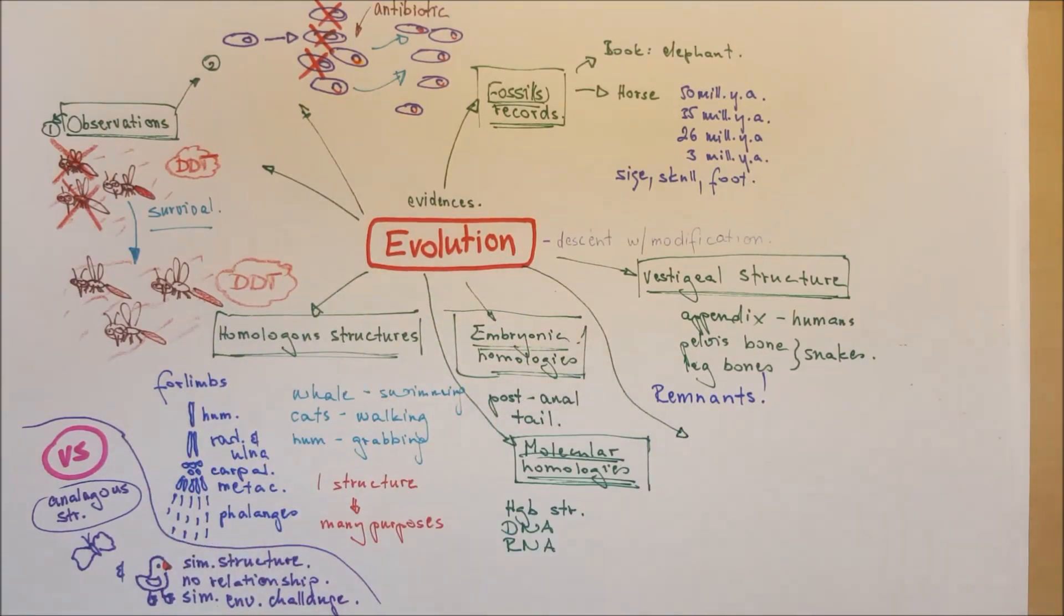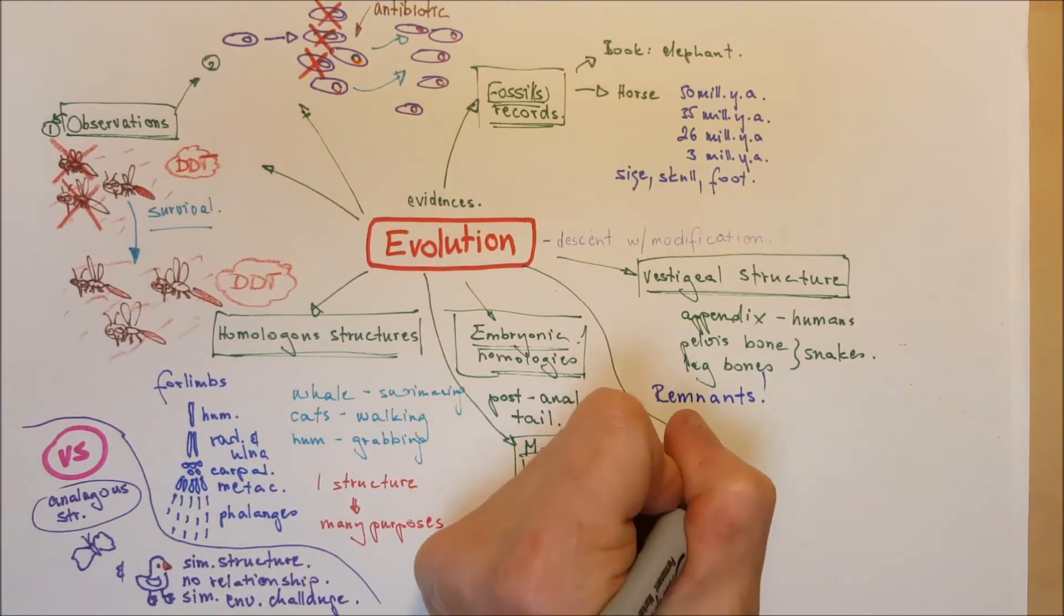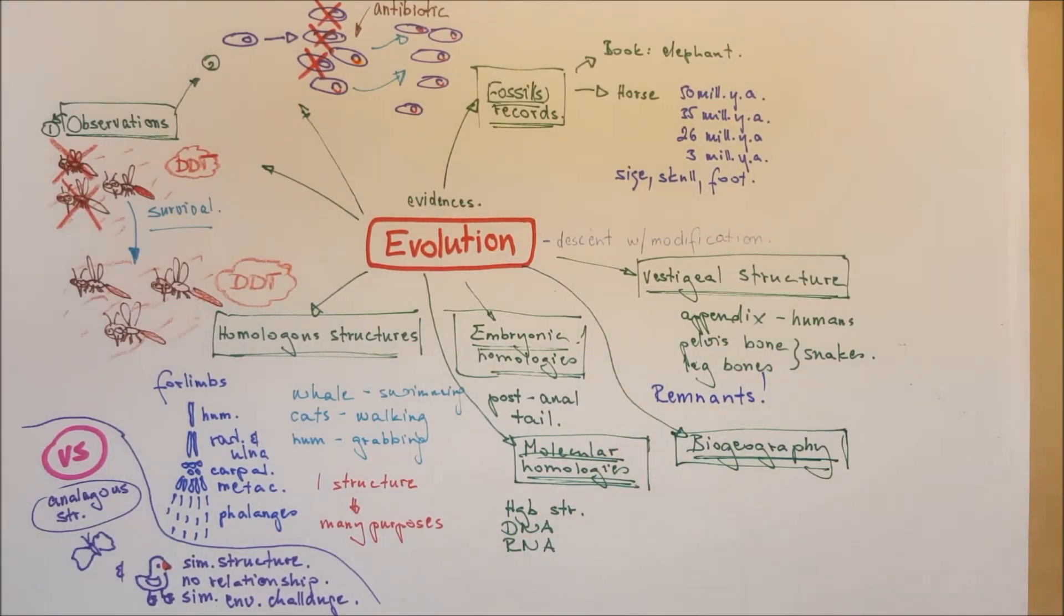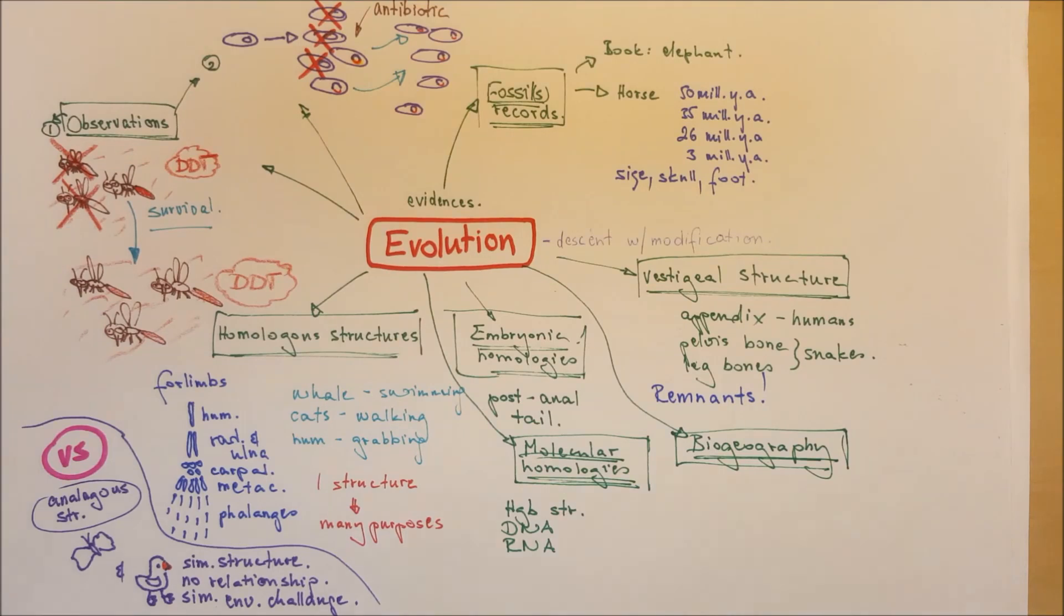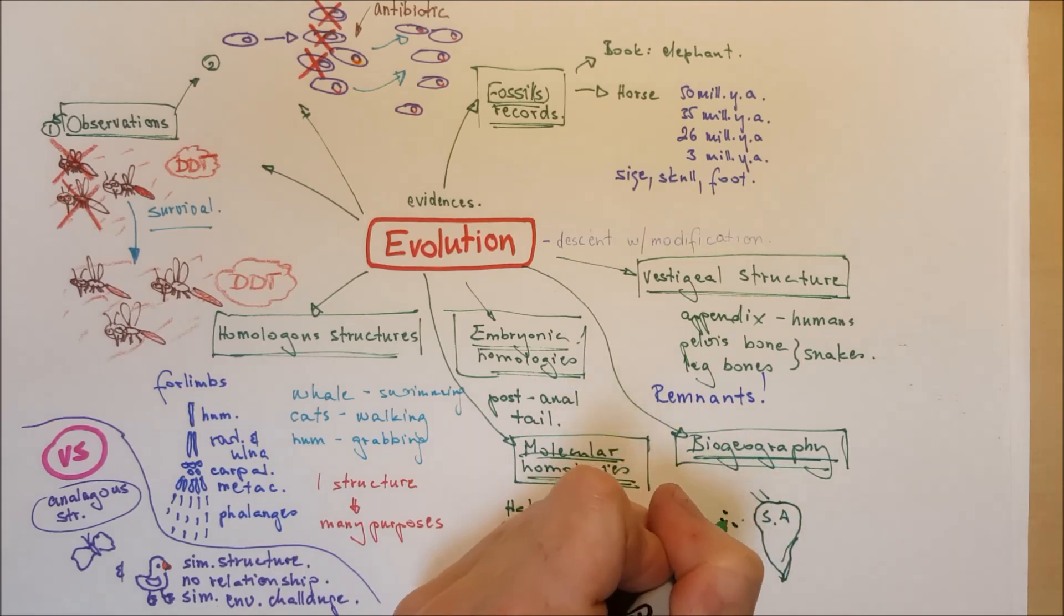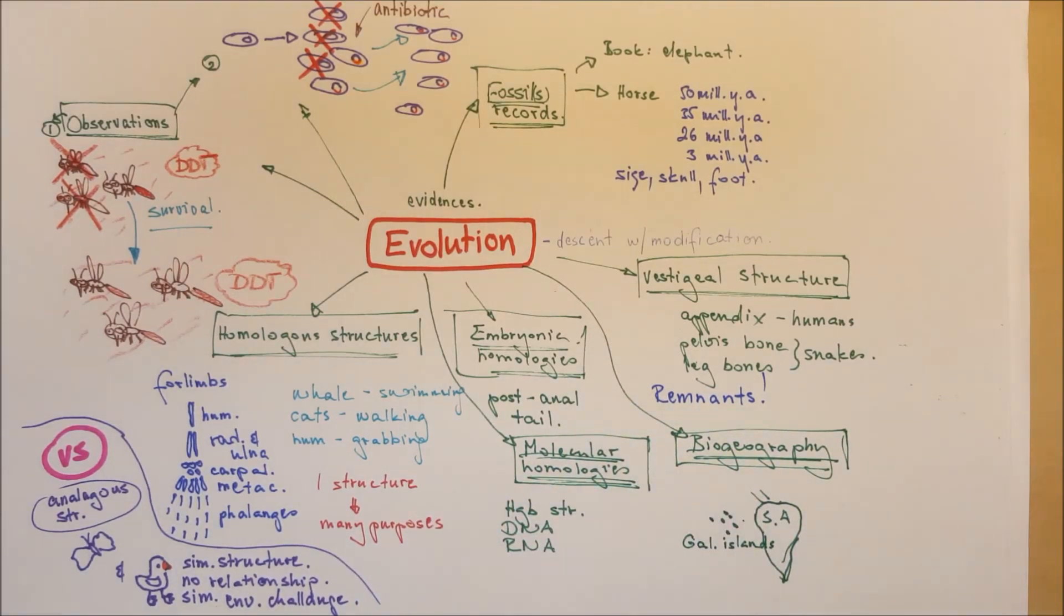And the last is biogeography. That means closely related species are usually found in areas that are geographically close to each other. For example, the Galapagos Island turtles, they are more related to each other than two different turtles around the world.